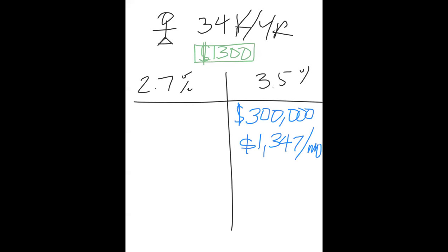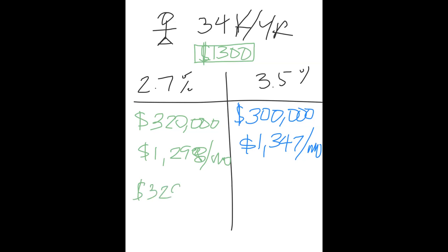Likewise, on the other side: if the interest rate drops to 2.7 percent — less than a full point — for Molly to pay the same amount, the sales price becomes $320,000, and Molly would pay $1,290 a month. Nothing has changed with the home. Getting closer, at $329,000 with a 2.7 percent rate, you get approximately $1,334 a month.